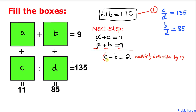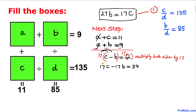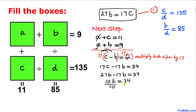Let's multiply both sides of c minus b equals 2 by 17, giving us 17c minus 17b equal to 34. From equation one, 17c equals 27b, so we substitute to get 27b minus 17b equal to 34.